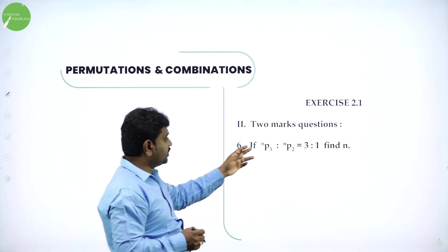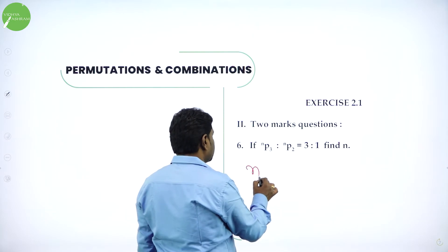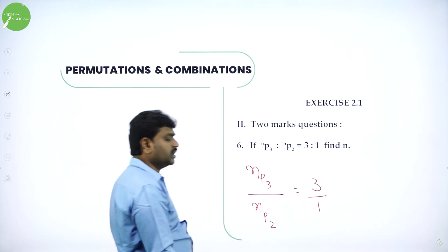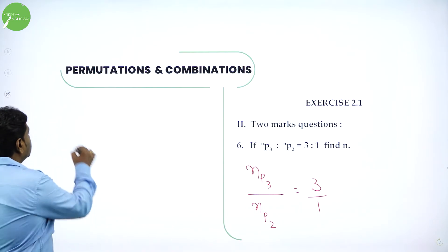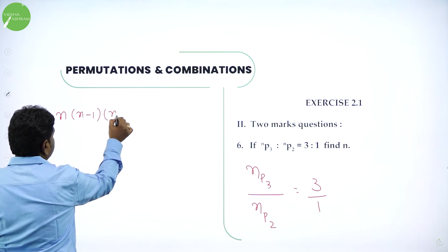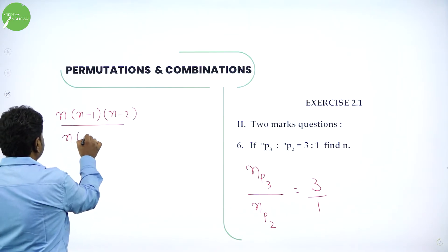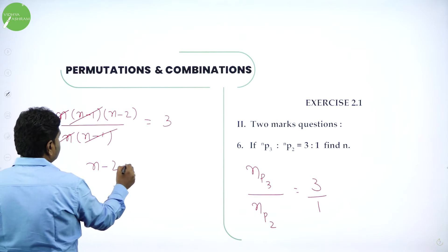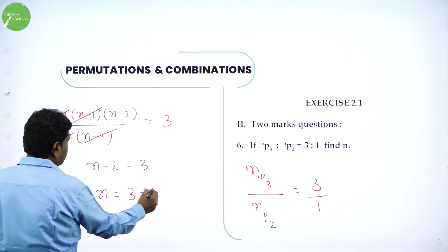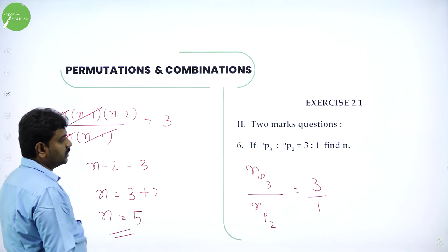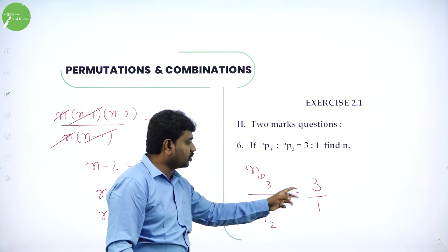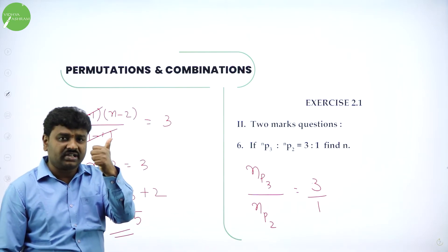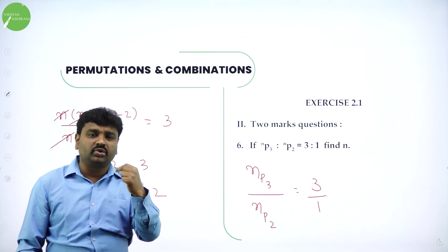NP3 to NP2 is 3 to 1 — find N. NP3 divided by NP2 equals 3. NP3 means start from N and expand 3 terms: N into N minus 1 into N minus 2. NP2 means N into N minus 1. N and N minus 1 cancel, leaving N minus 2 equals 3, so N equals 5.